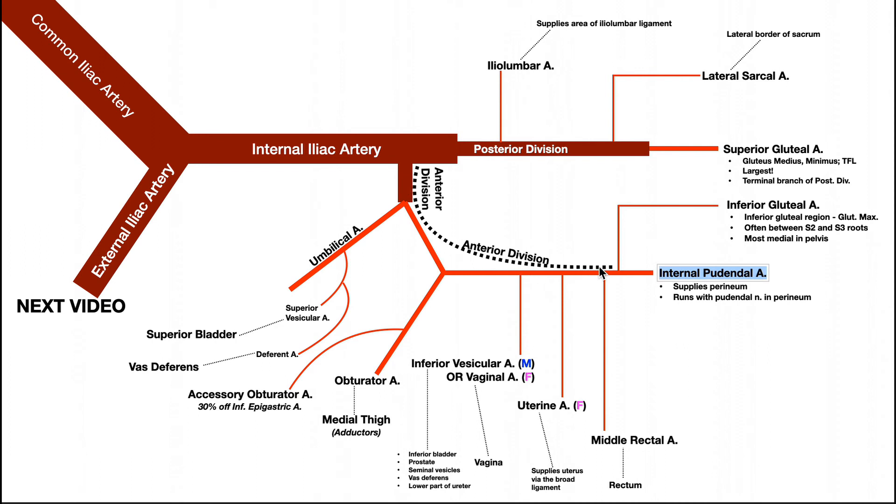It's not a true branch because it's not like coming off of it. It really just changes names. It becomes the internal pudendal artery. And this artery in general supplies structures near the perineum. And it also runs with the pudendal nerve in the perineum. And recall the pudendal nerve actually comes off of the sacral plexus. We'll actually talk more about that pudendal nerve probably in the next video.